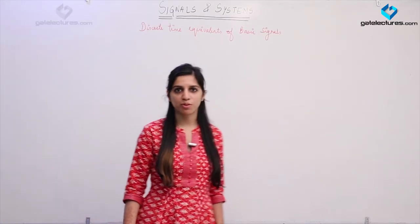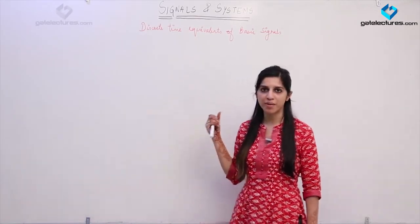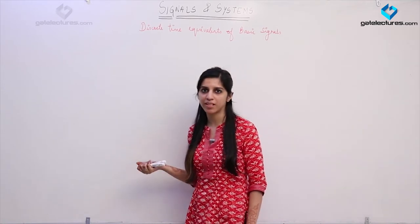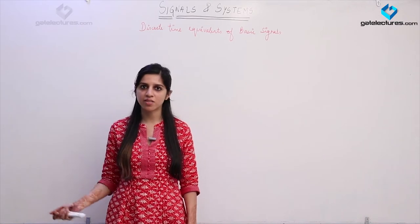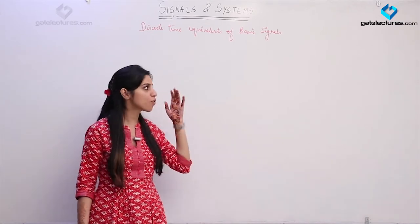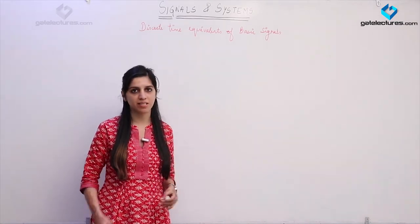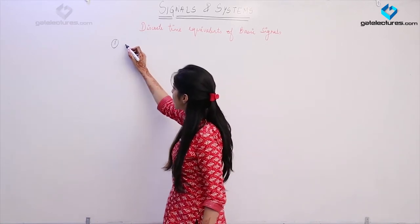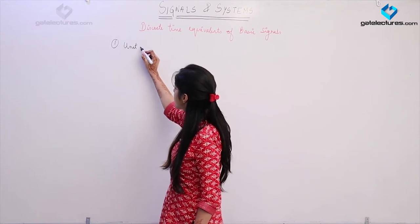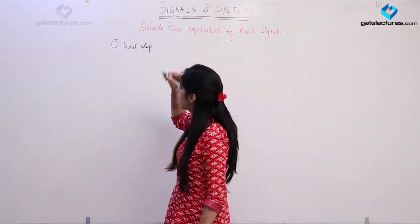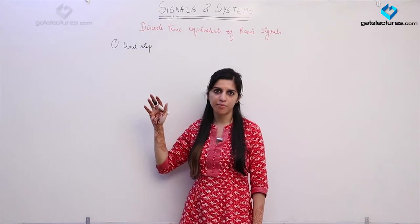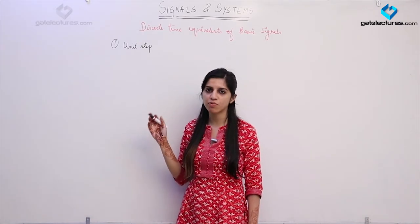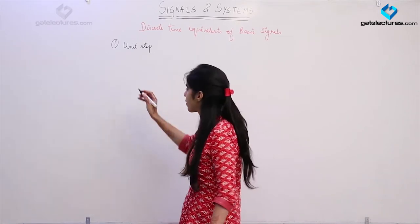Hello, so today we are going to look at some equivalents of basic signals in discrete time. We have already looked at unit step, unit ramp, and impulse signals in the continuous time domain, so we are just going to look at their equivalents in the discrete time domain by analogy.